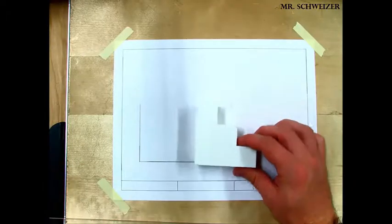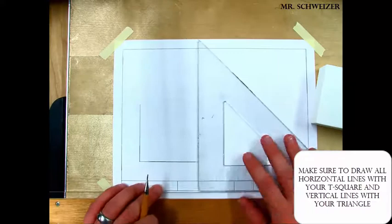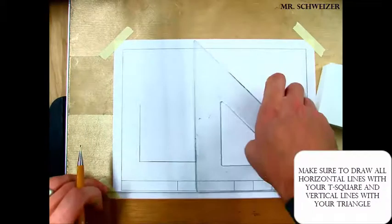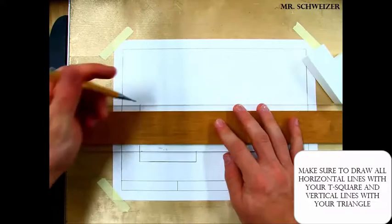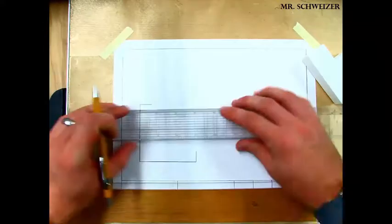To start the next two lines that's horizontal and vertical, I'm just going to take my triangle vertical and start my vertical line here. And then I'm going to take my t-square and I'm going to start my horizontal line up here, and then again finish these lines off with my ruler.